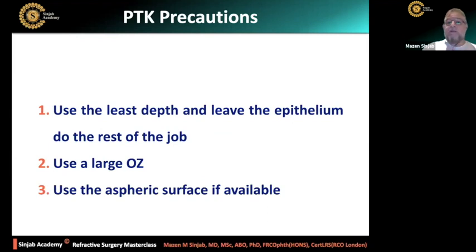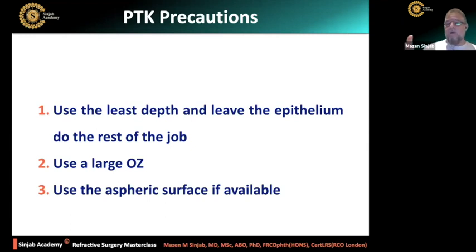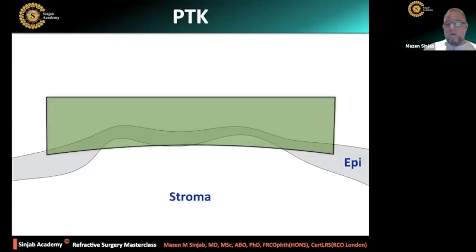The recommendations are: use the least depth and let the epithelium do the rest of the job, because we just need to regularize the cornea — we don't want to eat the stroma. Remember the epithelium has a filling effect, so you can remove some and let the epithelium remodel. Use a large optical zone, not small. Use the aspheric surface if available rather than the flat surface. We want to remove just the tips — don't go deeper in the stroma.